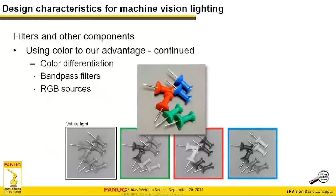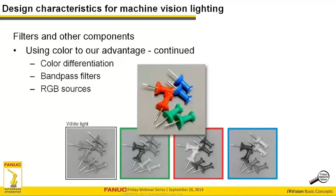Here's another way to look at it: shining white light at colored pins and wanting to differentiate them, you can use bandpass filters. A bandpass filter only allows one color through — green appears white under a green bandpass, red appears white under a red bandpass. You can also achieve this without filters using an RGB LED source, which can deliver red, green, blue, or any combination on demand — a great way to differentiate colors or highlight the foreground feature you want.